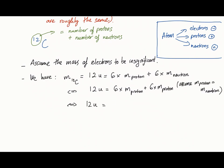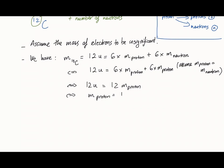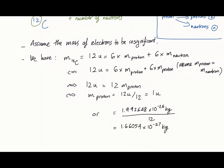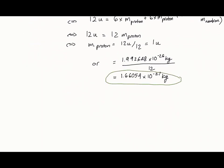So that will come down to 12u equals 12 times mass of protons. So the mass of a proton is equal to 12u divided by 12, which is 1u. Now, since 1u is a 12th of the carbon-12, this is our estimation of the mass of a proton or neutron from the definition of atomic mass.